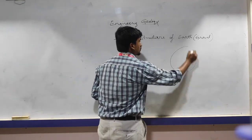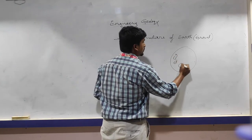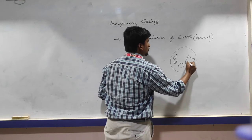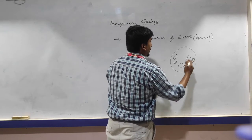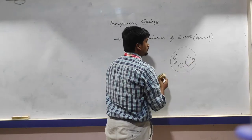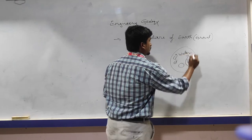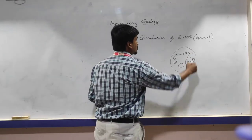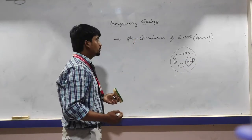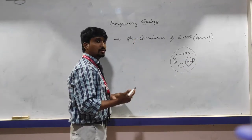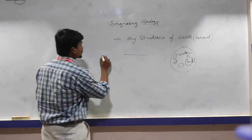So, what does the earth consist of? Earth consists of many islands, continents — earth consists of land and water. How are lands formed? The formation of the lands, the formation of the islands, the formation of the earth and the rock strata.